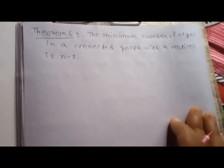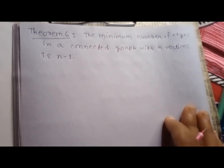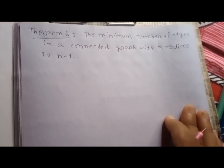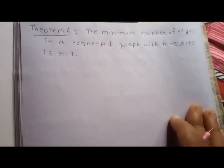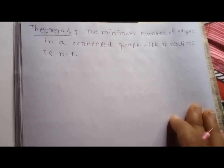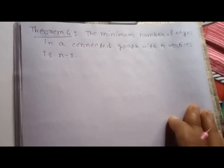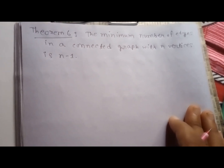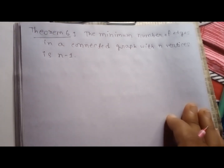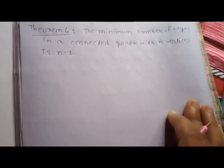Theorem 6: The minimum number of edges in a connected graph with n vertices is n minus 1.